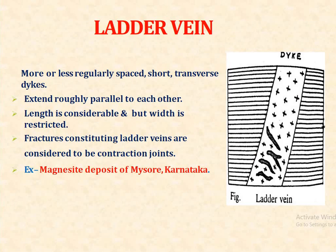Ladder veins are more or less regularly spaced short transverse dikes extended roughly parallel to each other. The length is considerable but width is restricted. Fractures constituting ladder veins are considered to be contraction joints. The Magnus Eye deposits of Hatti gold field, Karnataka, are of the ladder vein type.